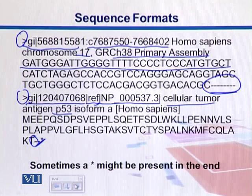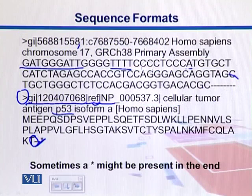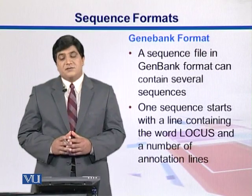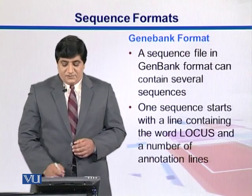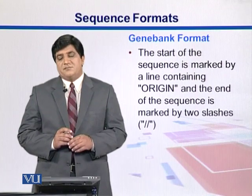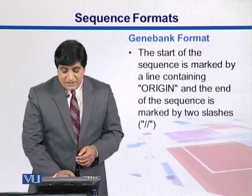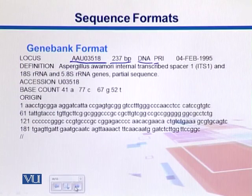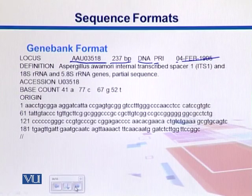GenBank is the format used in the GenBank database — a kind of standard format. In GenBank, records start with the word LOCUS, followed by description lines. The sequence starts with the word ORIGIN and ends with double slash signs. We start with LOCUS, then an ID showing 237 base pairs, short descriptions, DNA type, submission date, a definition line with gene descriptions, an accession number, and base counts showing how many A's, C's, G's, and T's are present.